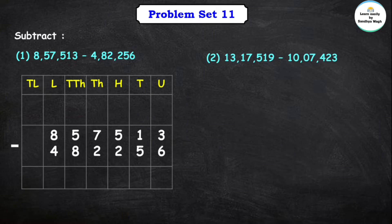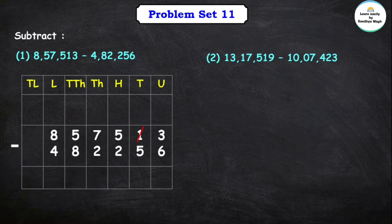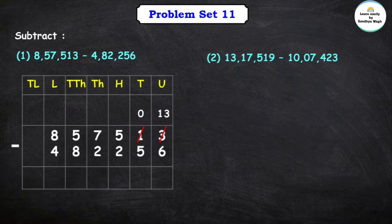Let us subtract the unit place first. Unit place digits are 3 and 6. We cannot subtract 6 from 3, so we borrow. We can easily subtract 6 from 13. 13 minus 6 is equal to 7.